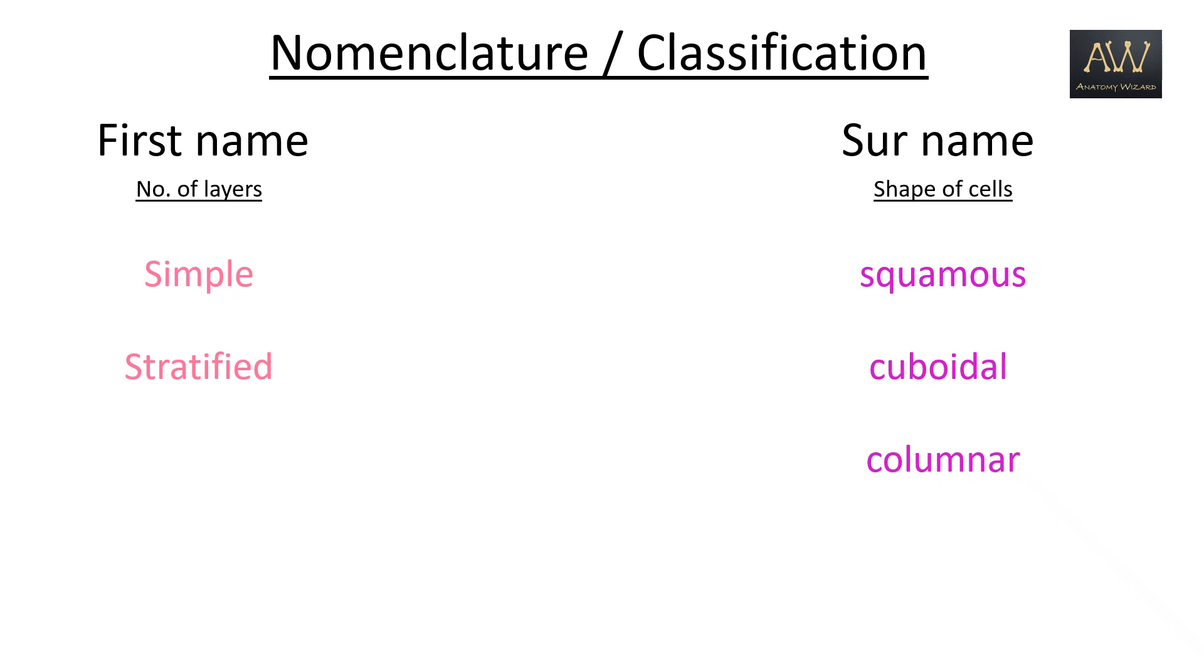Before moving further, it is important to understand that in a normal H&E stain section, it may not always be possible to identify the shape of a single cell by its outline.